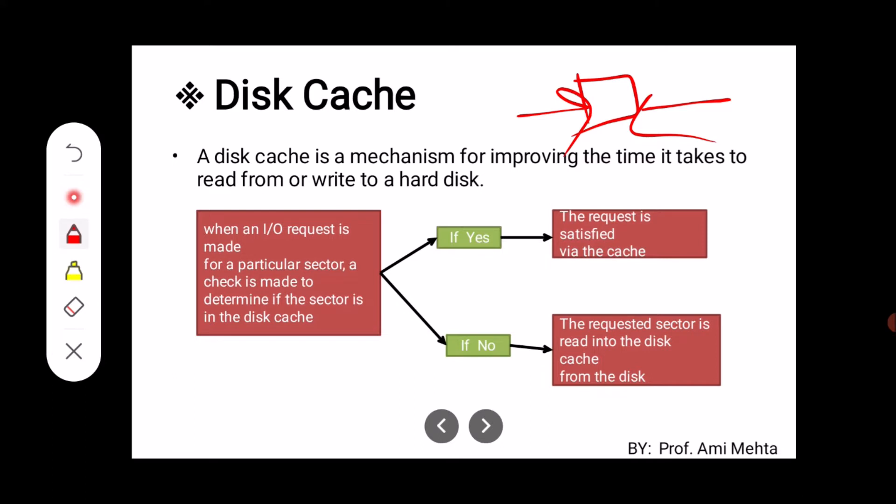When an input request is made, we want to read or write something for a particular sector in hard disk. In the hard disk there are various cylinders, and in a particular cylinder there is a track, and in the track there are sectors.